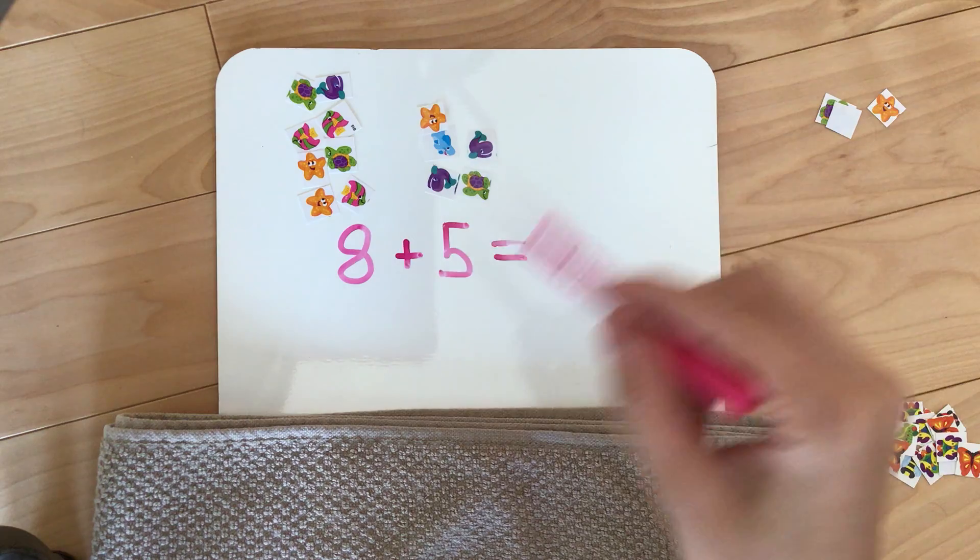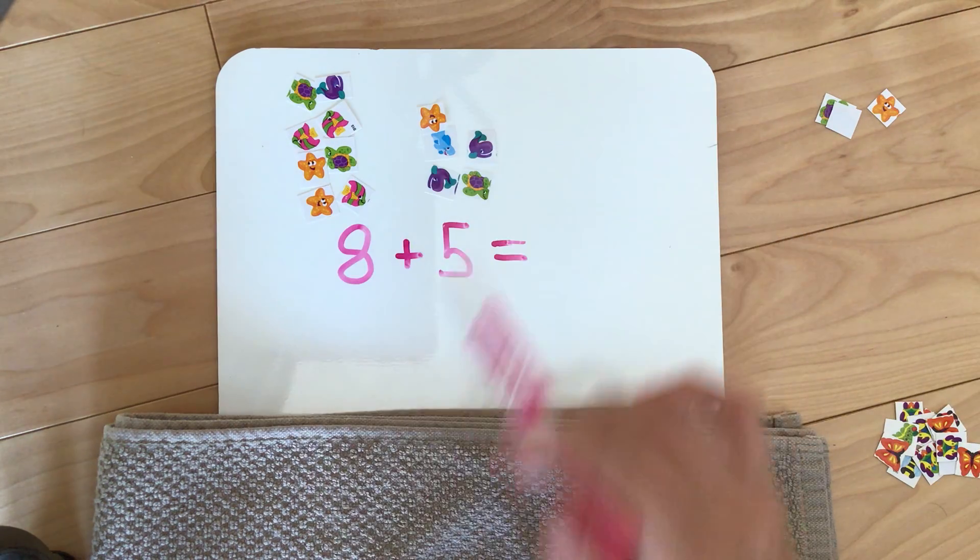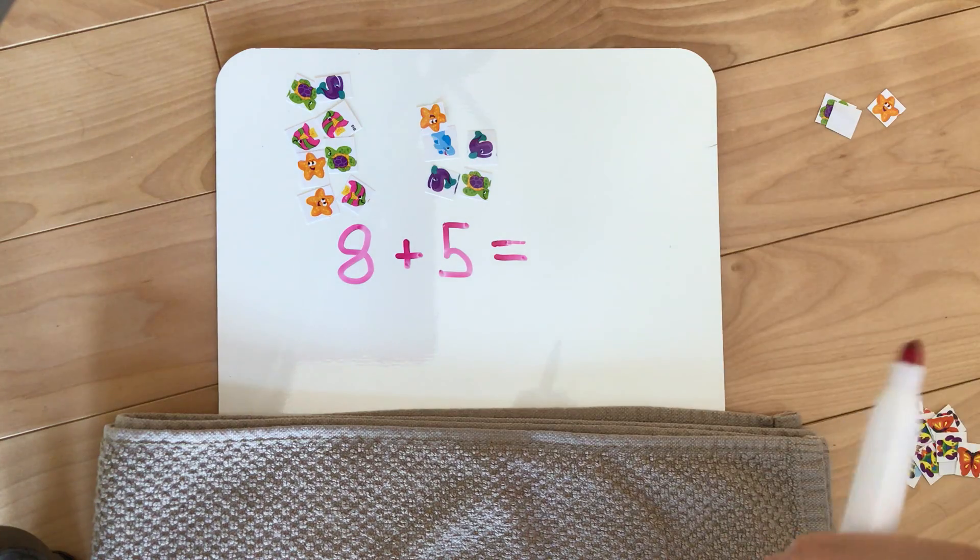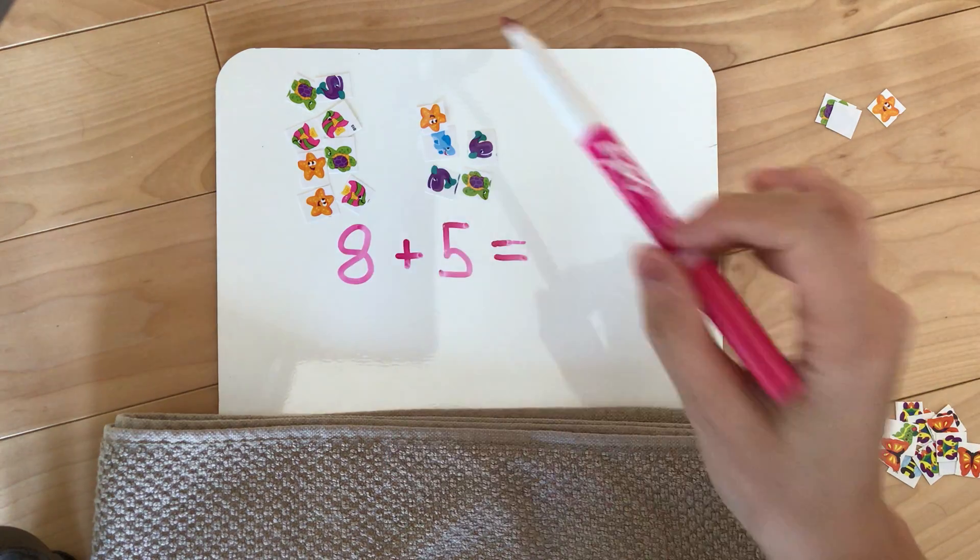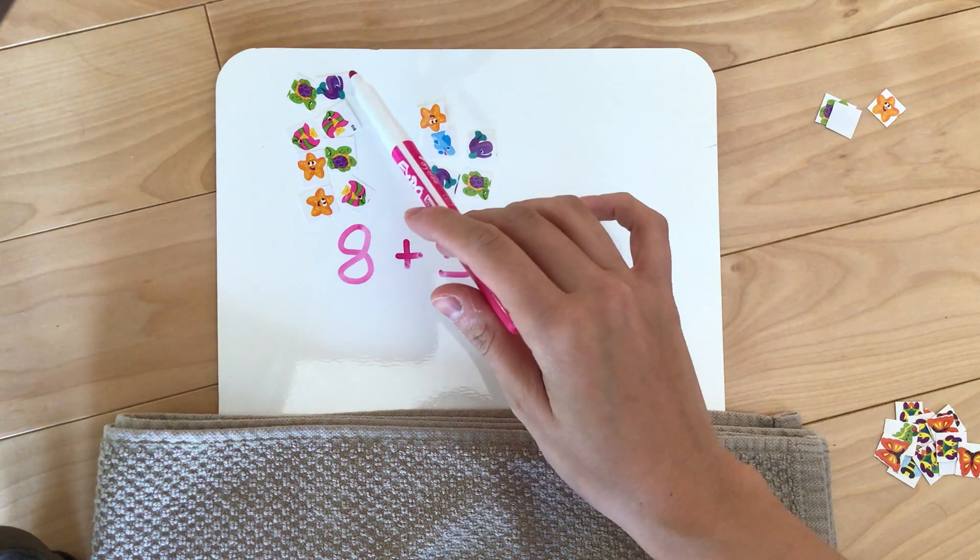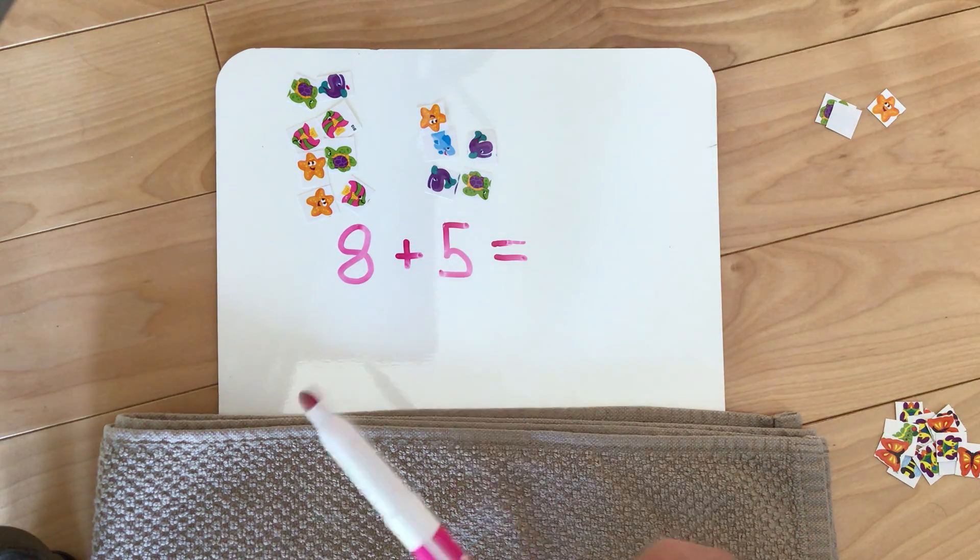So now I have my manipulatives as a visual and now we have to count them all together to get our sum of our problem. I'm gonna use a pink marker so that I can tap my stickers and once I know that I've counted them they'll have a little pink dot on them so I know not to count them again.